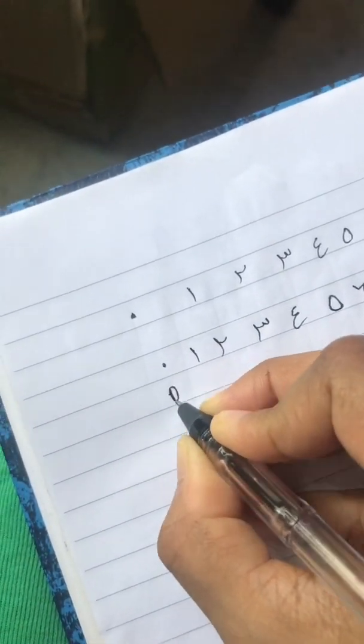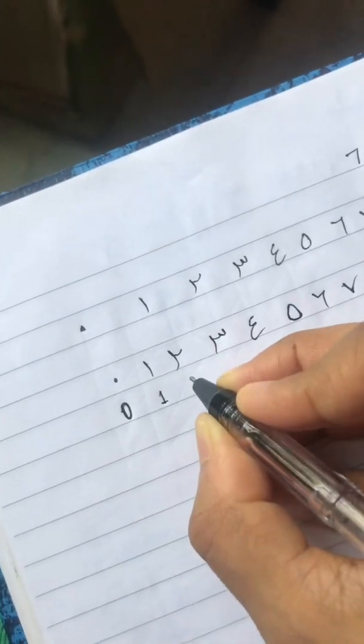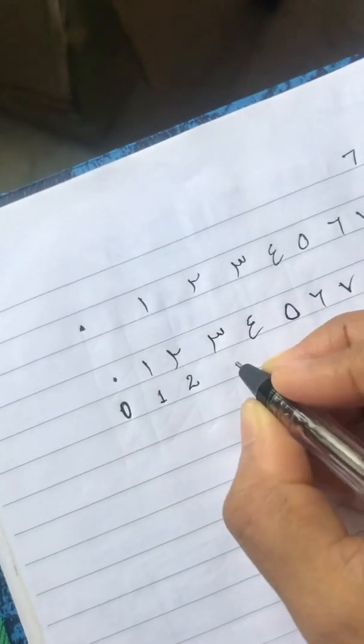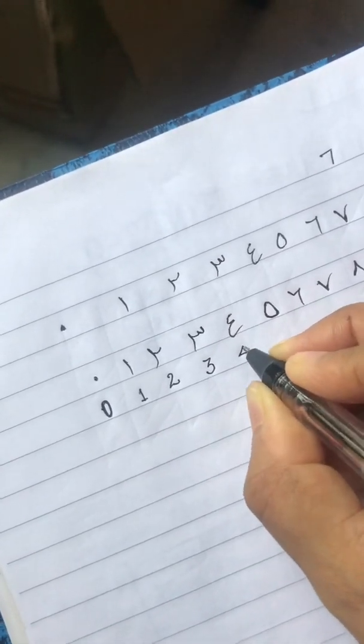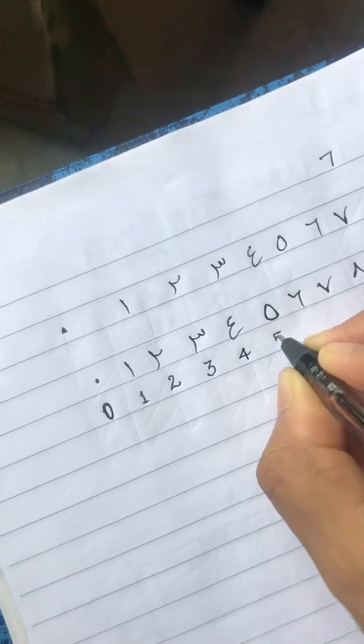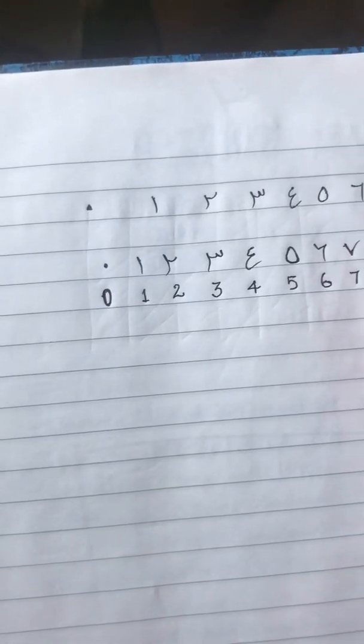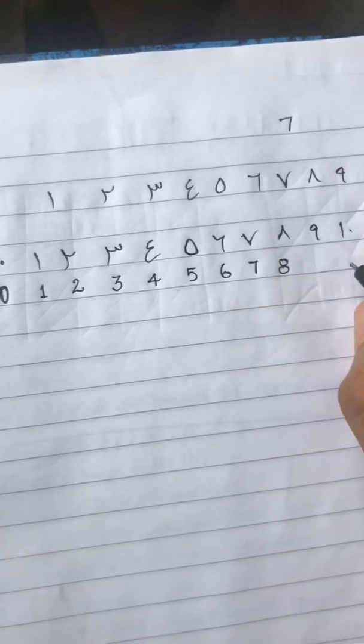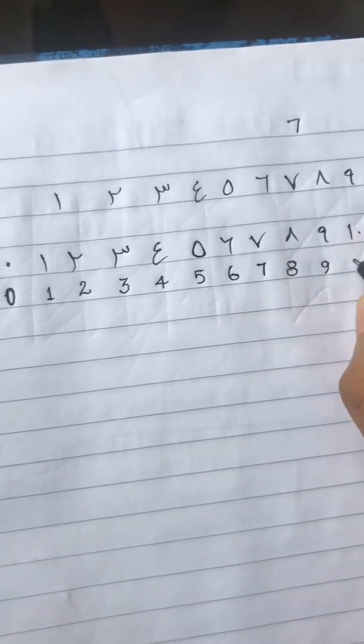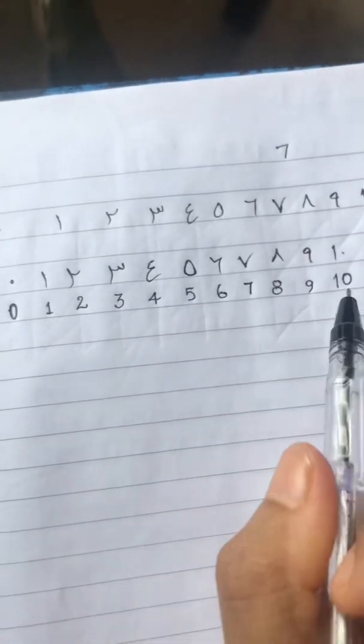Seven, thamania eight, tis'a nine, ashara ten. It's kind of similar really, it's not that complicated, you can see.